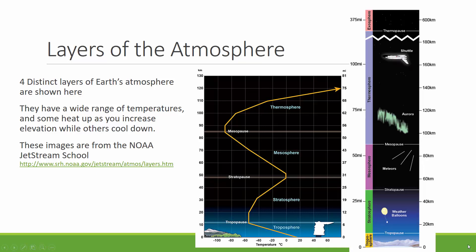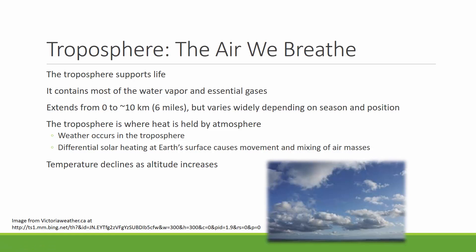There's the troposphere — that's the area that we're familiar with, that we experience — the stratosphere, mesosphere, and thermosphere. The troposphere is critically important because that's where life is supported. This is the air that we breathe. It also contains most of the water vapor and the essential gases, because they all hang out close to Earth's surface.